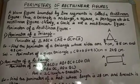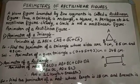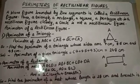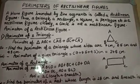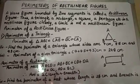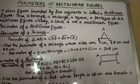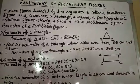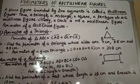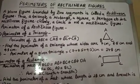A plane figure bounded by line segments is called a rectilinear figure. A line segment has a particular distance — that is called a line segment. And a plane figure that is bounded by line segments...